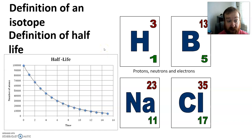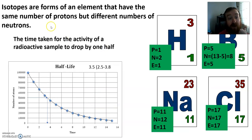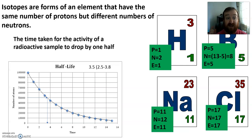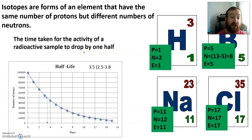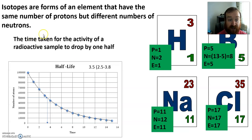If you haven't, make sure you pause the video and give it a go, but the answers are here. Isotopes are forms of an element that have the same number of protons but different numbers of neutrons. Half-life is the time taken for the activity of a radioactive sample to drop by one half. You can change 'activity' for the mass of the isotope, or how much radiation is given out by an isotope — something sensible — so long as you've got 'time taken.'